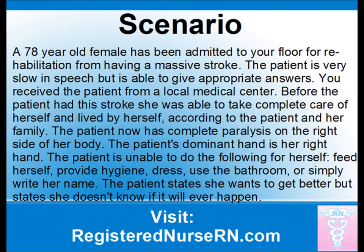Here we will develop a nursing diagnosis with some interventions and goals. Here is a typical nursing scenario you might encounter in nursing school or on the job. A 78-year-old female was admitted to your floor for rehabilitation from having a massive stroke. The patient is very slow in speech but is able to give appropriate answers. You receive the patient from a local medical center. Before the patient had this stroke, she was able to completely care for herself and live by herself, according to the patient and her family. The patient now has complete paralysis on the right side of her body. The patient's dominant hand is her right hand. The patient is unable to feed herself, provide hygiene, dress, use the bathroom, or simply write her name. The patient states she wants to get better, but states she does not know if this will ever happen.